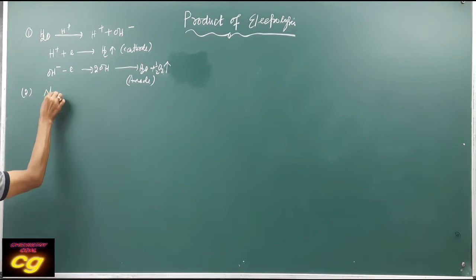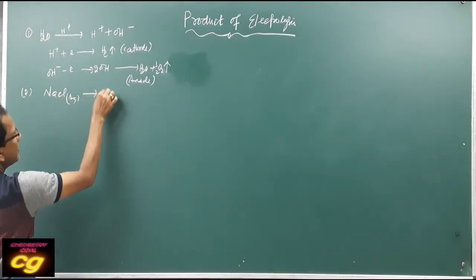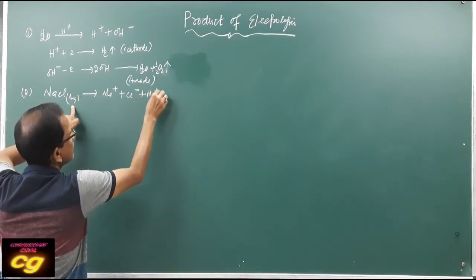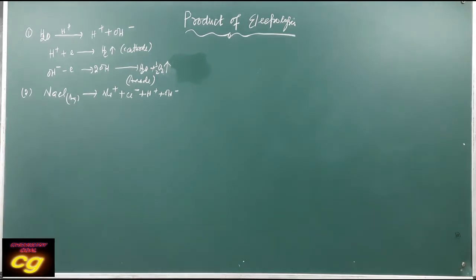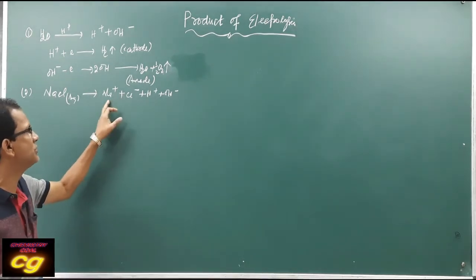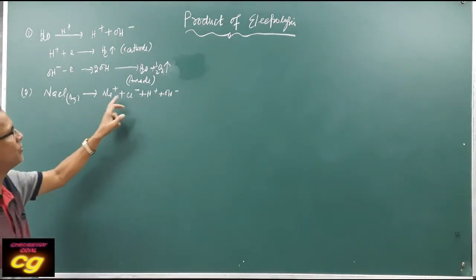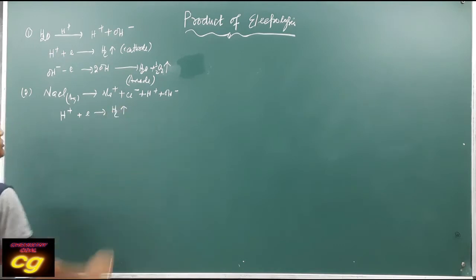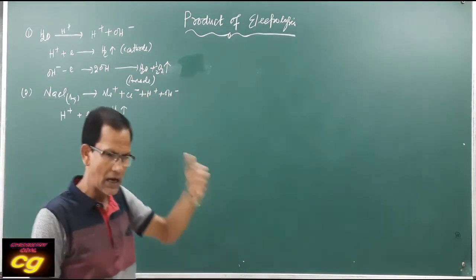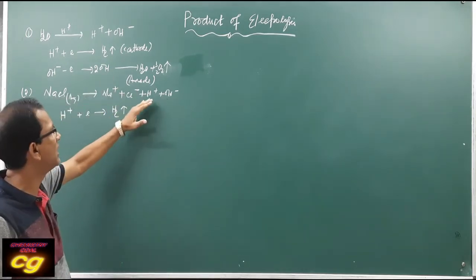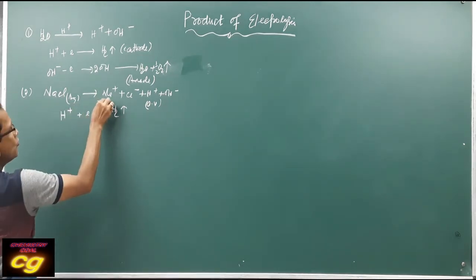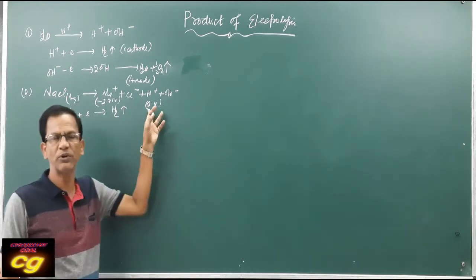If you take aqueous sodium chloride, it produces Na+ and Cl− ions. Since it is aqueous, it also has H+ and OH− ions in solution. Between Na+ and H+, H+ ion moves towards the cathode, gains an electron, and becomes H2 gas — because hydrogen has higher reduction potential than sodium. The standard reduction potential of H2 is 0 V, while sodium is −2.71 V, so H2 is preferentially reduced.